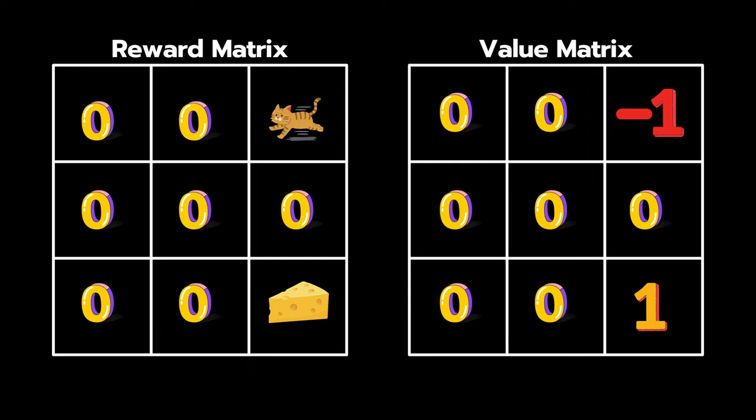So if Jerry starts at 2,1, the best action is still to move right. However, unlike last time, Jerry's movement outcomes are probabilistic, which means there's only a 50% chance to move right and end up in state 2,2.